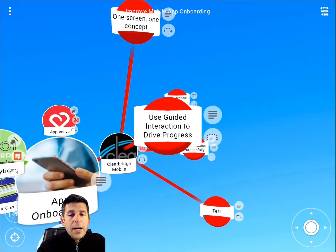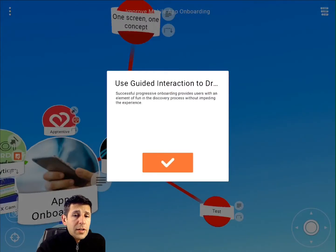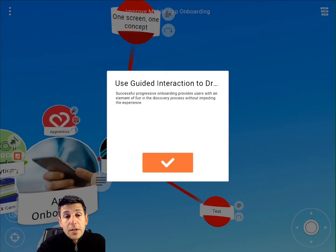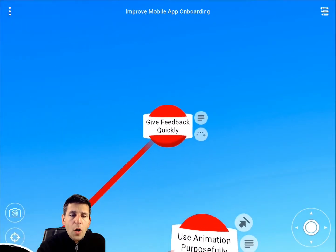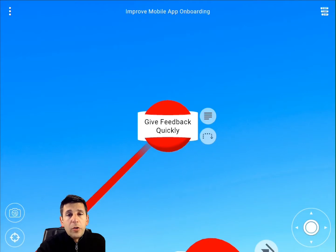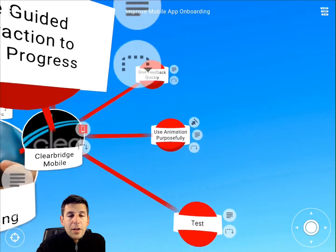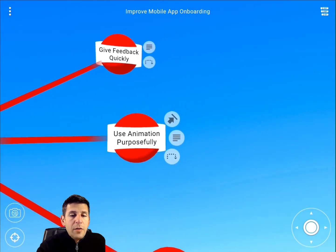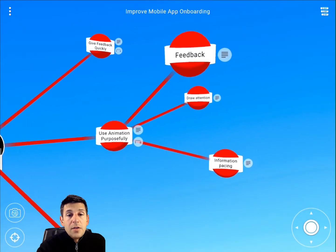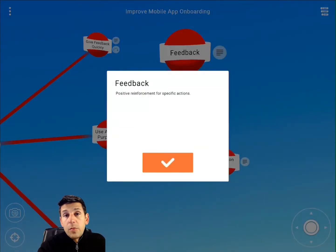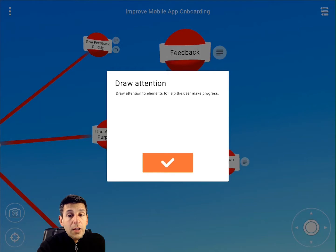ClearBridge also talks about using guided interaction to drive progress. As they put it: successful progressive onboarding provides users with an element of fun in the discovery process without impeding the experience — any way you can achieve that is generally a good thing. They also talk about giving feedback quickly. As the onboarding process progresses, if the user is doing what they need to do successfully, they should be sort of cheered on as they go. Another thing they stress is using animation purposefully — good reasons include giving users positive reinforcement as they progress and drawing attention to specific UI elements.